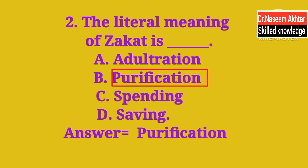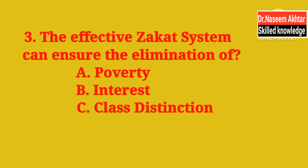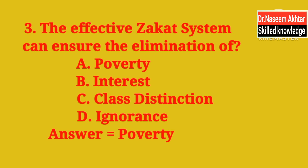MCQ 3: An effective Zakat system can ensure the elimination of — A. Poverty, B. Interest, C. Class Distinction, D. Ignorance. The correct answer is A — Poverty.